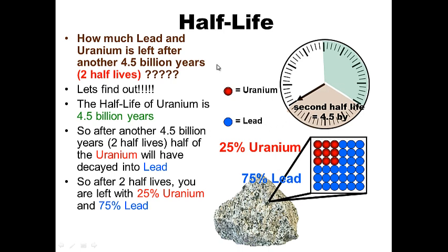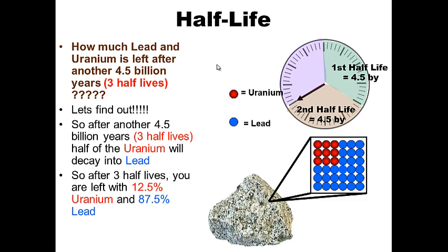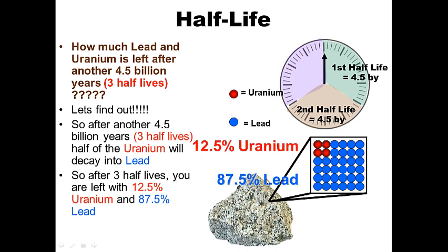One more example: how much lead and uranium is left after another 4.5 billion years — three half-lives? After three half-lives I'm left with 12.5 percent uranium and 87.5 percent lead. So assuming I have roughly 12 atoms of uranium and 88 atoms of lead — or percentage-wise 12.5% uranium and 87.5% lead — I know the rock is about 13.5 billion years old based on three half-lives.